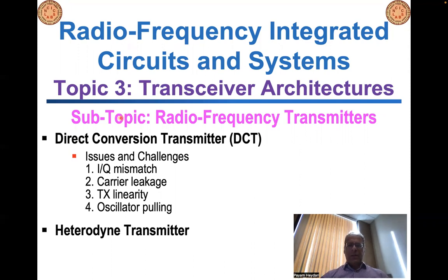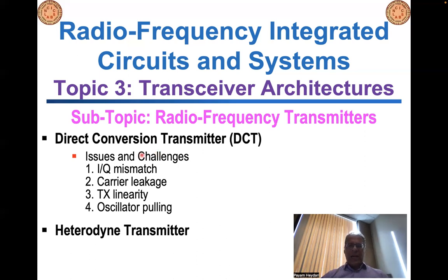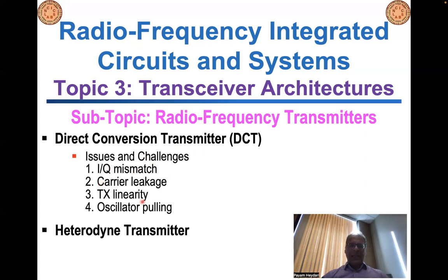Now here in this lecture, I will look at radio frequency transmitters. I start off by looking at direct conversion transmitters, or DCTs, because of their simple architecture and structure. Then I will look at the issues and challenges in regard to radio frequency transmitters. Several of these issues will apply to a generic radio frequency transmitter, including in-phase and quadrature mismatch, carrier leakage, and transmitter linearity. These challenges apply to different types of transmitter architectures.